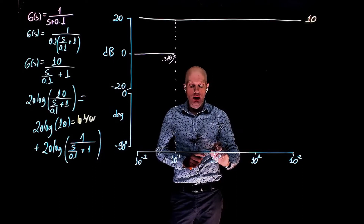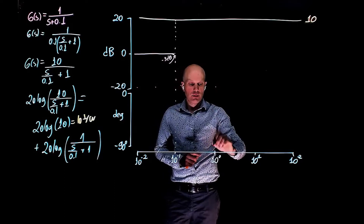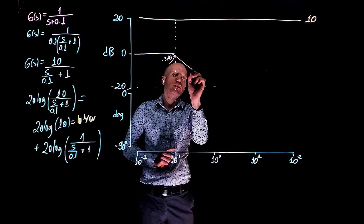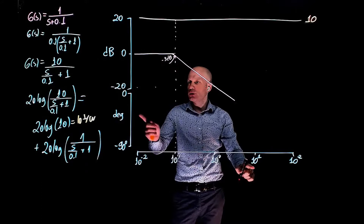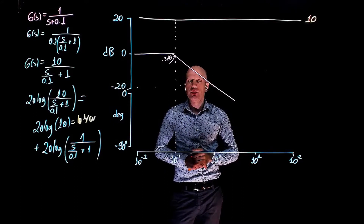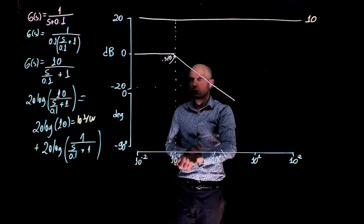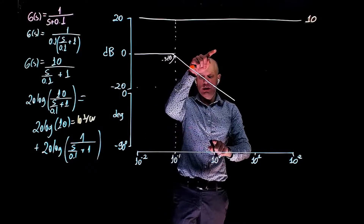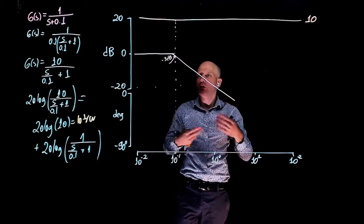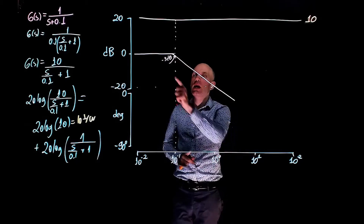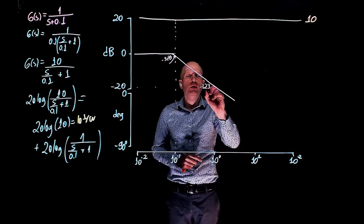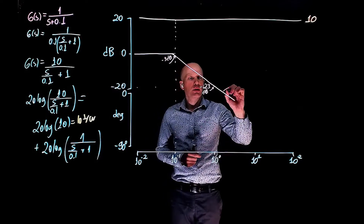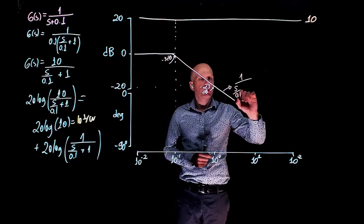Past the cutoff frequency it goes down by 20 dB per decade. At 10 to the power of 1 we should be roughly at negative 20 dB, and at 10 to the power of 2 we should be at roughly negative 40 dB. Notice that at the cutoff frequency the gain is negative 3 dB. We increased the frequency by a factor of 10, so the Bode plot decreases by 20 dB, hence negative 20 minus 3, so around negative 23 dB if we account for those negative 3 dB. This is coming from 1 over (s over 0.1 plus 1).